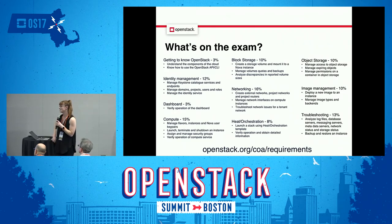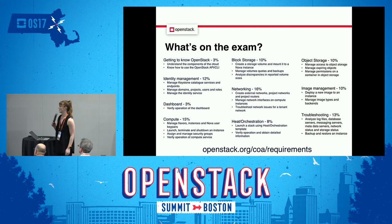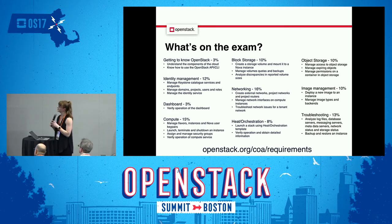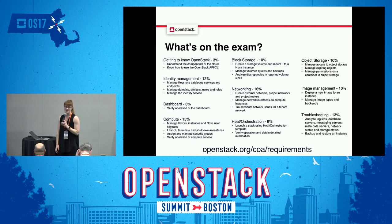All of this is available at openstack.org/COA/requirements, so I'd encourage you to go there rather than stressing about writing everything down. Like I said, we're not testing on nuances between releases — we're really trying to hit the big points at a high level: can you use OpenStack? To practice, go to that requirements page, pull it up, and if you can go through every item and say 'I know how to do that,' you can even spin up DevStack to verify. Then you're going to be just fine.